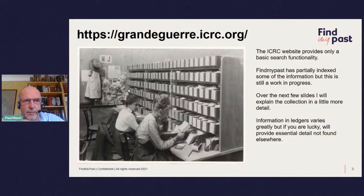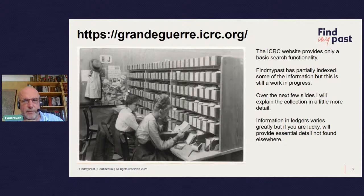The URL is at the top of the slide, but if you just Google 'prisoners of war First World War ICRC' you'll get there easily enough. The website has basic search functionality. Find My Past has partially indexed some of the information but it's still a work in progress. Over the next few slides I'll take you through the best way to look at the collection and explain it in a little more detail. Information in ledgers does vary — it can provide as much information as you'd find on a card, or in some cases an awful lot more.